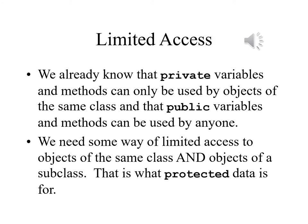It may seem strange for a derived class to need to use accessors to get access to the data belonging to the base class. The reason is because these items were declared as private, and private is exactly what the name implies — private. We already know that private variables and methods can only be used by objects of the same class, and public variables and methods can be used by any class.